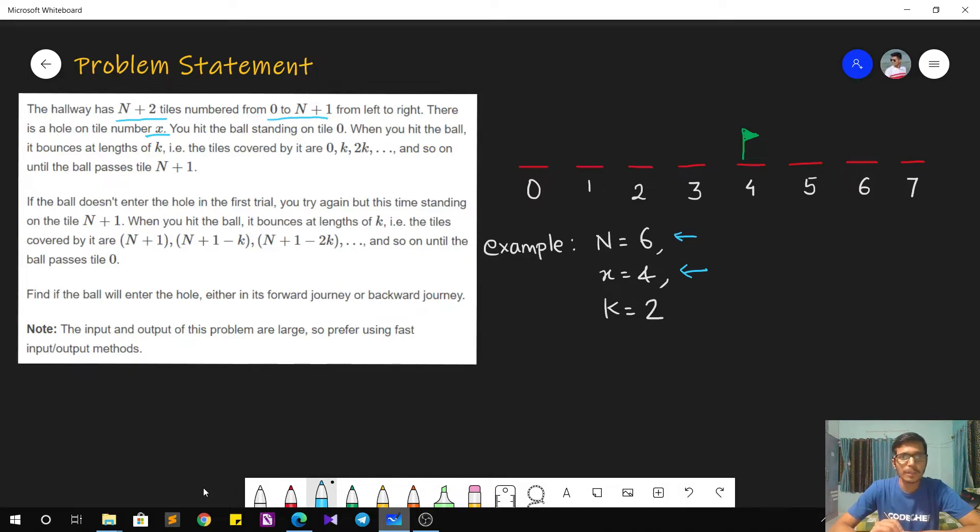Now what happens is that we are playing the game of golf. We hit the ball by standing on tile number 0. The ball starts from tile number 0 and it bounces at length k. The value of k will be given in the input as well. For example, if the value of k is 2 then the bounces will be of length 2. So it will go from 0 to 2, then from 2 to 4, 4 to 6 and so on.